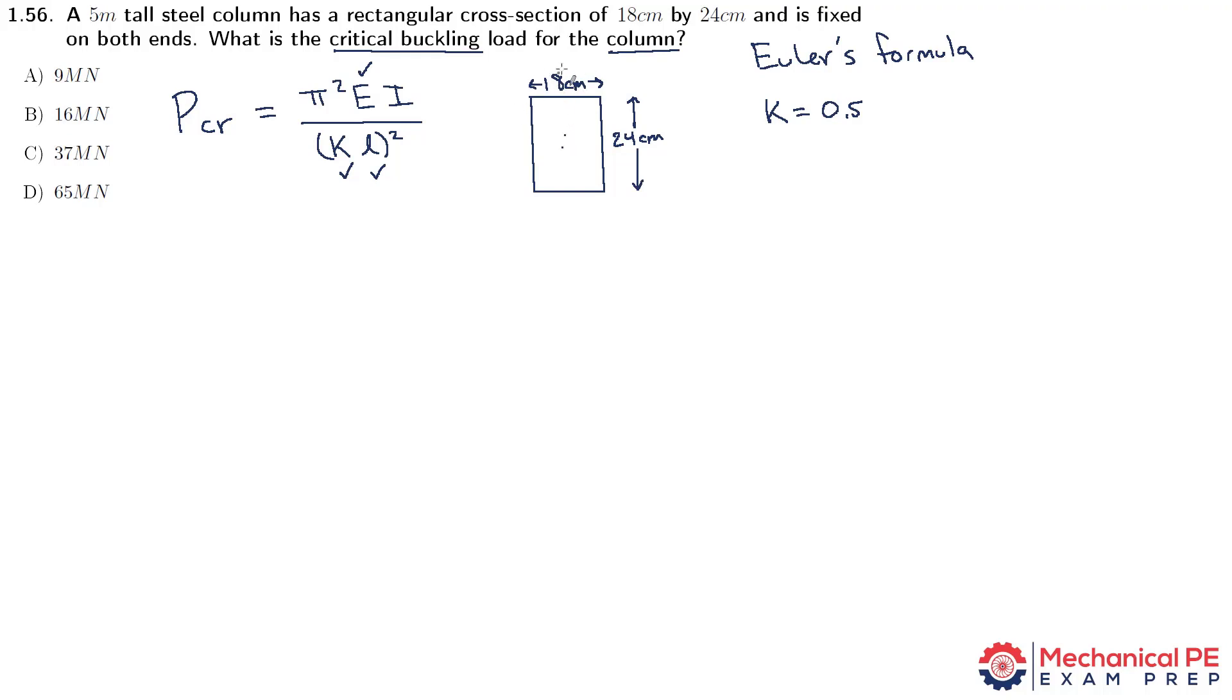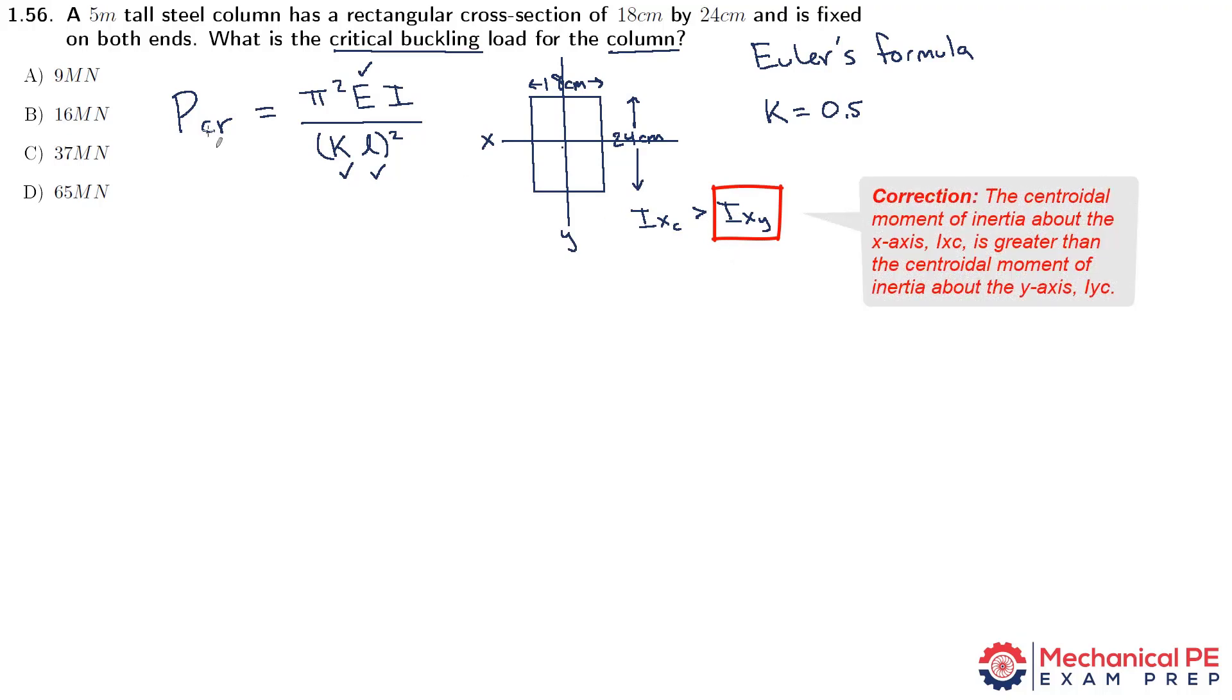So what we want to say then is that we expect the moment of inertia about the y-axis to be smaller than the moment of inertia about the x-axis. We expect that Ixc is going to be greater than Iyc. And the critical buckling load is the minimum load that will cause buckling. So we want to use the smallest moment of inertia. So we're going to use Iyc instead of Ixc. And if you're not sure about that, then you can remind yourself about the equation.